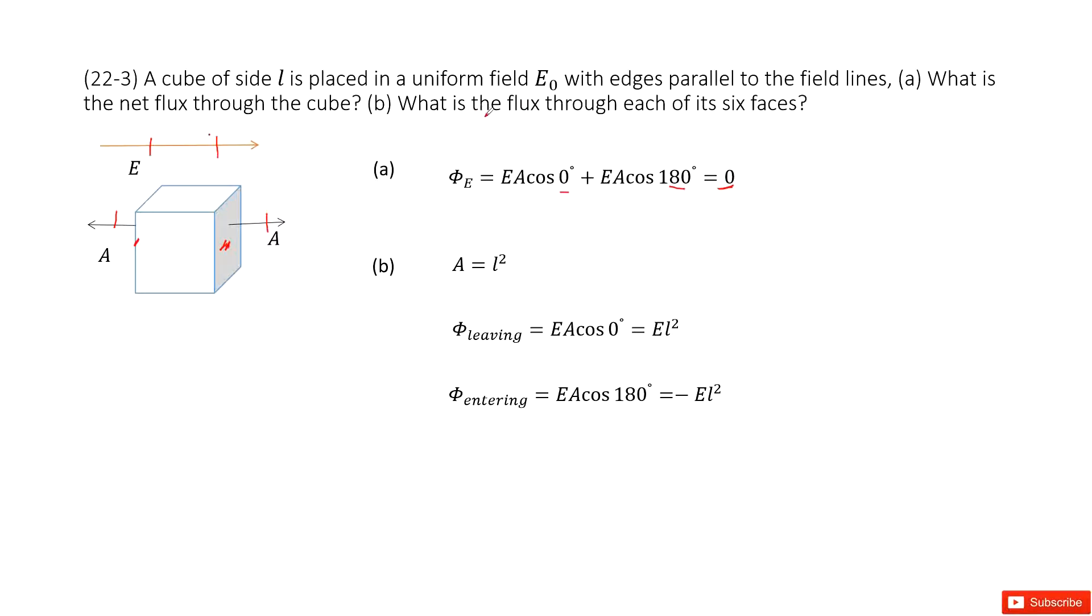Now, what is the flux through each of its six faces? So as you can see, in this case, for each face, the area is L squared. L squared - side length is L.